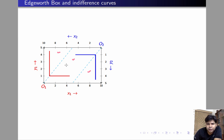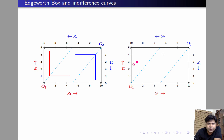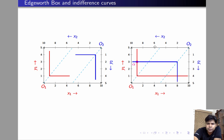We are going to check by picking arbitrary points from these three regions whether they are efficient or not. Let us begin by picking a point in the region lying above the 45-degree line through the origin of individual 1. Let us plot an indifference curve of individual 1 through this point — this is how it's going to look. And this is the indifference curve of individual 2 through alpha.